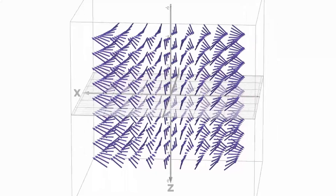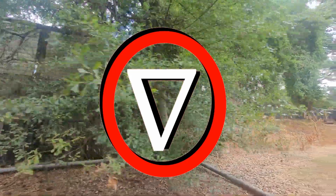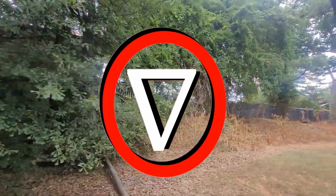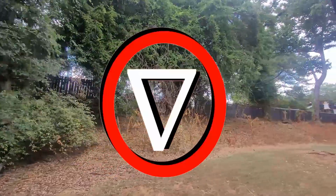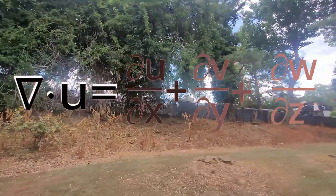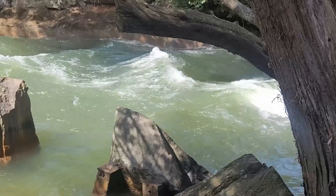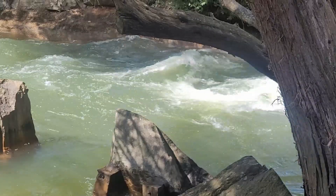U represents the vector field of a fluid. Vectors represent the velocity of a specific particle within the fluid. This symbol, called the nabla — an upside-down triangle — is the gradient; that is, the derivatives or the rate of change for each vector with respect to all three dimensions of our world.